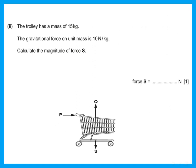The trolley has a mass of 15 kilograms. The gravitational force G is 10 newtons per kilogram. Calculate the magnitude of S. S is the force due to gravity — that is weight. Weight equals mass times gravitational force: W = Mg. M is 15 kg and G is 10, so S is 150 newtons.